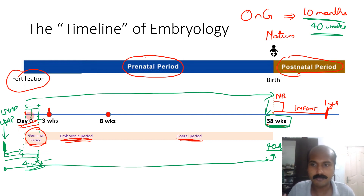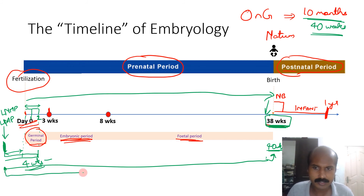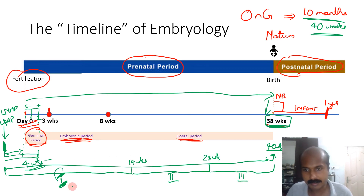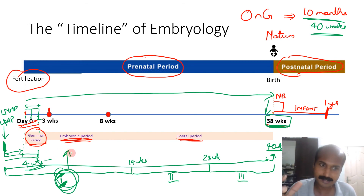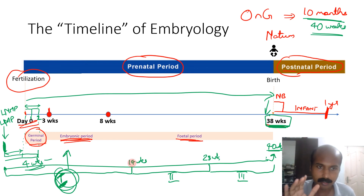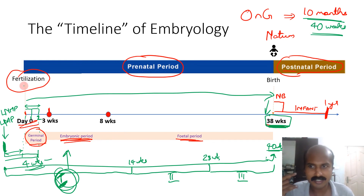Within the obstetric period, the 40 weeks are divided into three trimesters. The first 14 weeks is the first trimester, the next 14 weeks (up to 28 weeks) is the second trimester, and from 28 weeks to 40 weeks is the third trimester. The first trimester includes both the germinal period and the embryonic period — the most sensitive period, when germ cell formation and organogenesis occur. So the first trimester is a very critical point in the embryo's life.